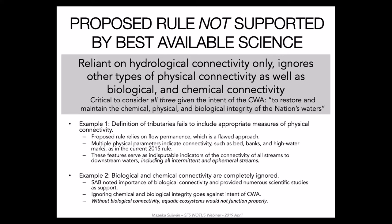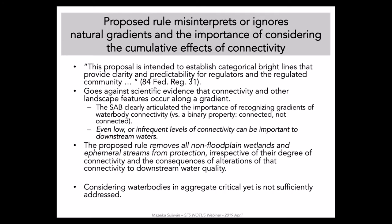Consider the proposed rule's definition of tributaries, which the agencies define as a river, stream, or similar naturally occurring surface water channel that contributes perennial or intermittent flow to a traditional navigable water or territorial sea in a typical year. The use of flow permanence from a scientific perspective is flawed, as we know that intermittent and ephemeral flows in particular can have significant consequences for downstream waters. The use of flow alone opposes current science, which supports the use of multiple physical parameters indicating connectivity — such as bed, banks, and high water marks — which serve as indisputable indicators of connectivity for all streams, including intermittent and ephemeral streams.